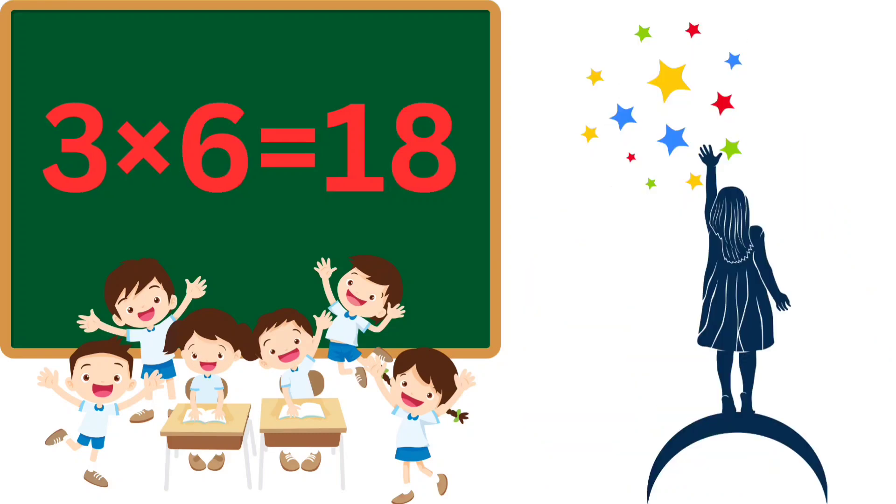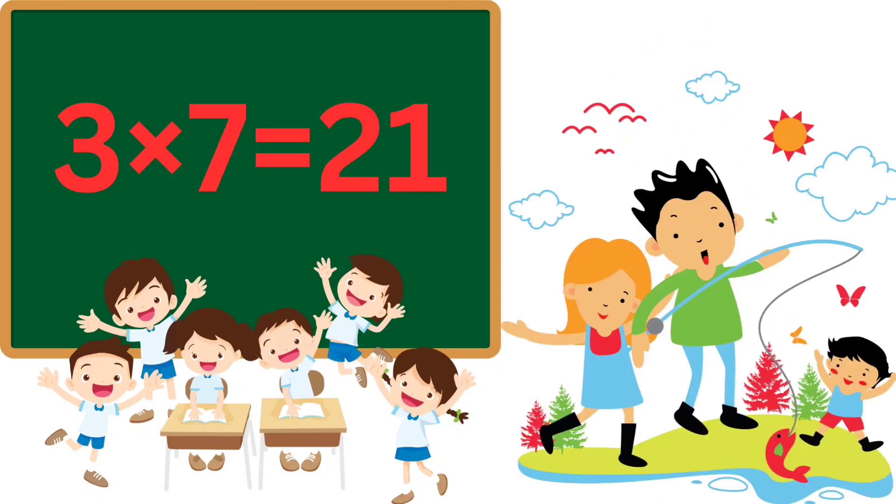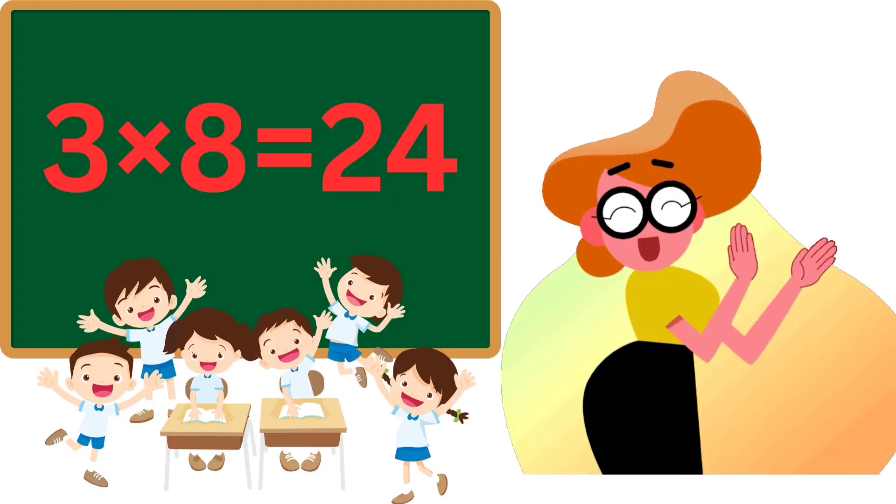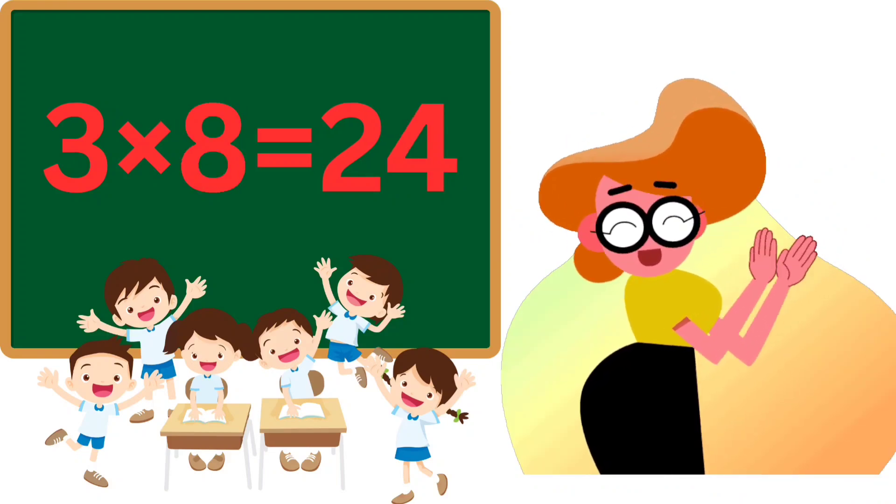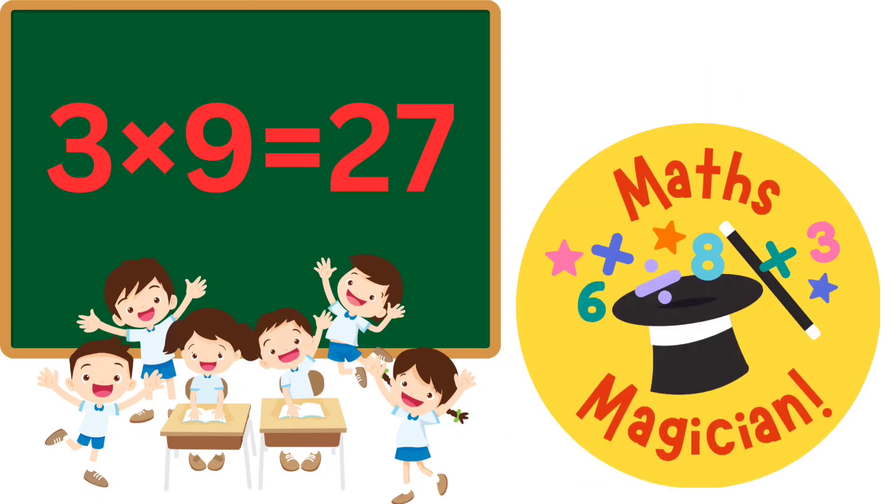3×5=15, jump up high. 3×6=18, reach the sky. 3×7=21, having fun. 3×8=24, clap your hands.